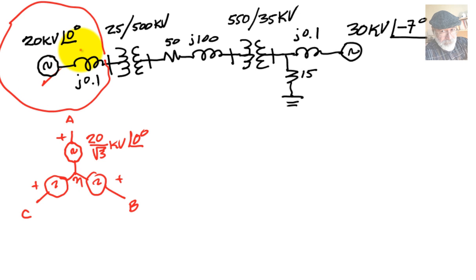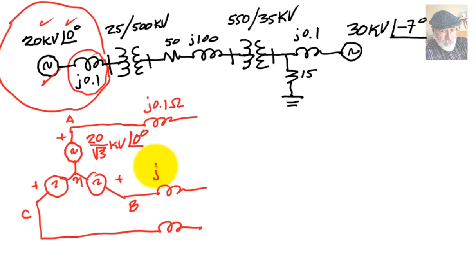That takes care of this generator and of those three values. What about these impedances? Well, those are in reality three inductive reactors in series with the generator connected like so. The value in ohms of each one of them is 0.1 ohms reactive, 0.1 ohms reactive, and 0.1 ohms reactive.